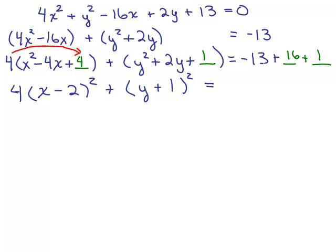So what do I have on the right-hand side? Negative 13 plus 16 plus 1, or negative 13 plus 17, is 4. We're getting closer to the standard form of this ellipse. The only thing I have left to do is divide both sides by 4 so that the equation equals 1.